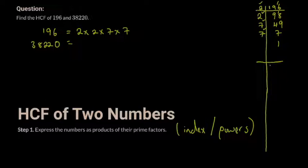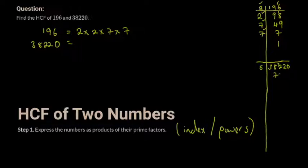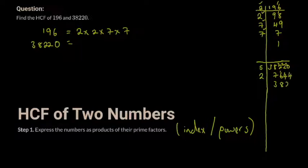For 38,220 I'm going to start with 5 because my number ends in zero, so 5 is definitely a factor. 5 into 38,220 gives 7,644. Then 5 into 7,644 gives 1,528. Then 5 into 1,528 gives... continuing until I get 764, then 5 into that gives... I'll now try 2 because my number ends in an even number. Dividing by 2 repeatedly gives me 382, then 191.